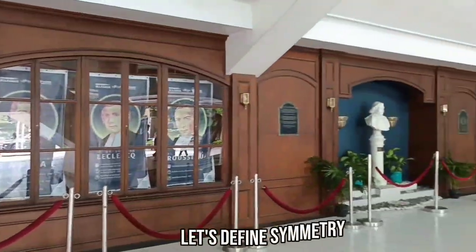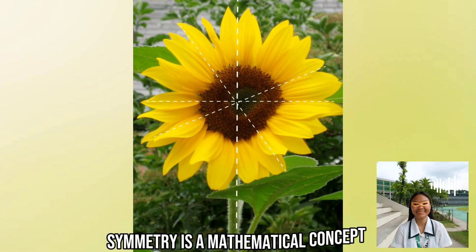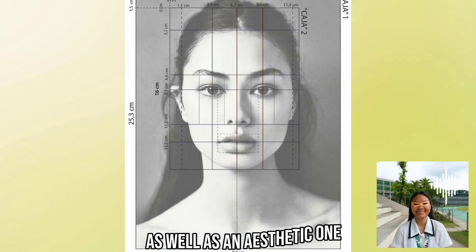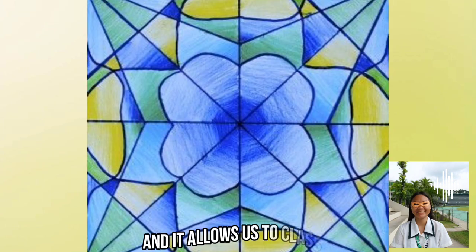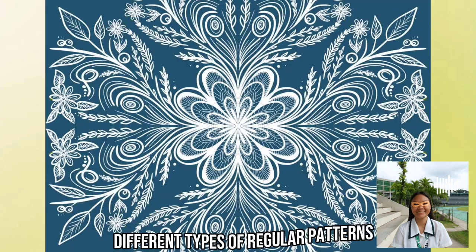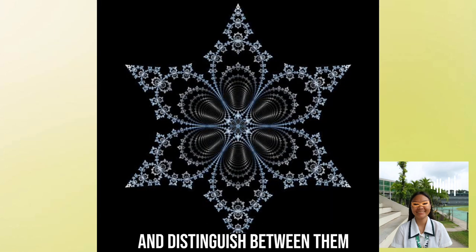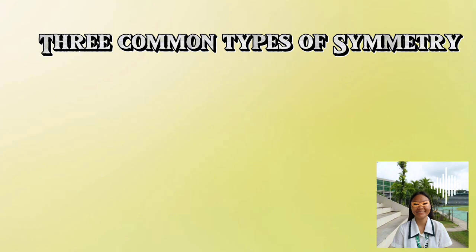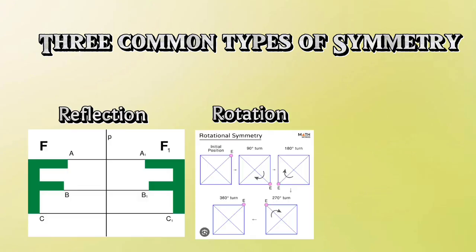Let's define symmetry. Symmetry is a mathematical concept as well as an aesthetic one, and it allows us to classify different types of regular patterns and distinguish between them. There are three common types of symmetry: reflection, rotation, and translation.